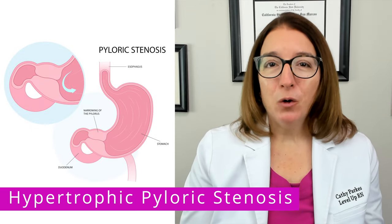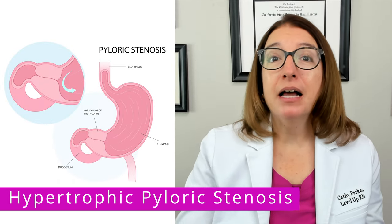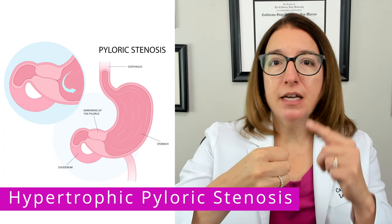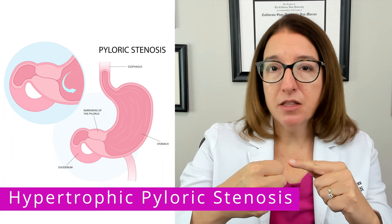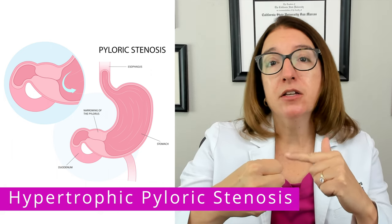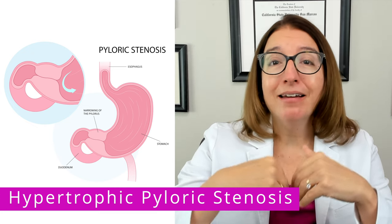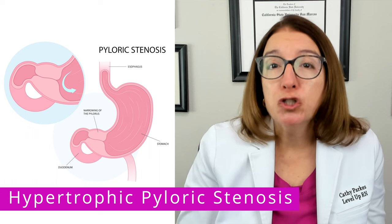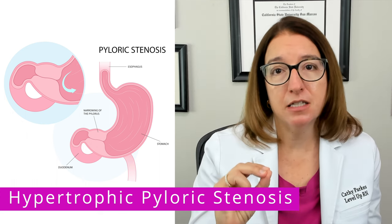With hypertrophic pyloric stenosis, we have thickening of the pyloric sphincter, which is located between the stomach and small intestine. This blocks the movement of food from the stomach into the duodenum. Since food can't get through this way, it comes out the other way, and we end up with projectile vomiting, which is a hallmark symptom of this disorder.